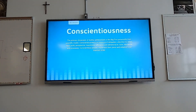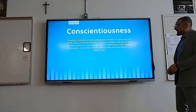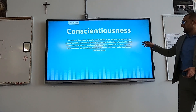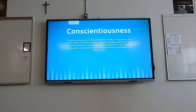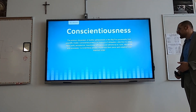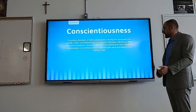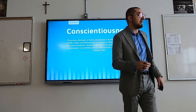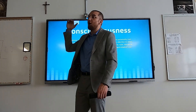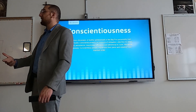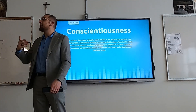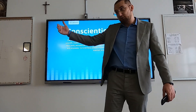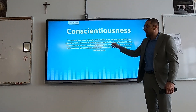Next is Conscientiousness. Conscientiousness is the primary dimension of achievement in the Big Five personality trait. It's a measure of obligation, attention to detail, hard work, persistence, cleanliness, efficiency, and adherence to rules, standards, and processes. The school system is set up so that people who rank highest in conscientiousness do the best — we inundate you with so many assignments that if you're not willing to see things through to the end, you struggle. That's your obligation.